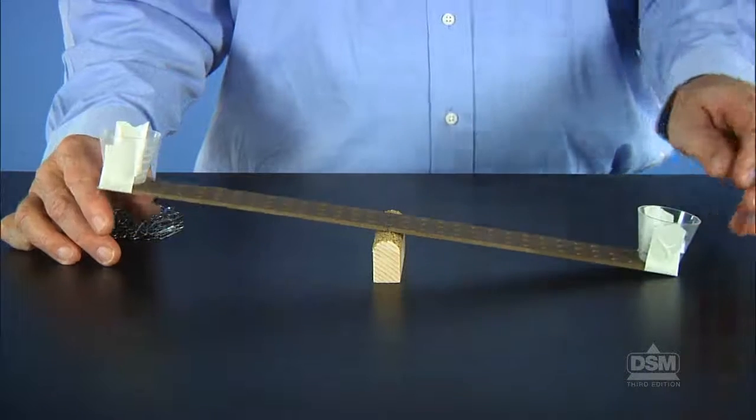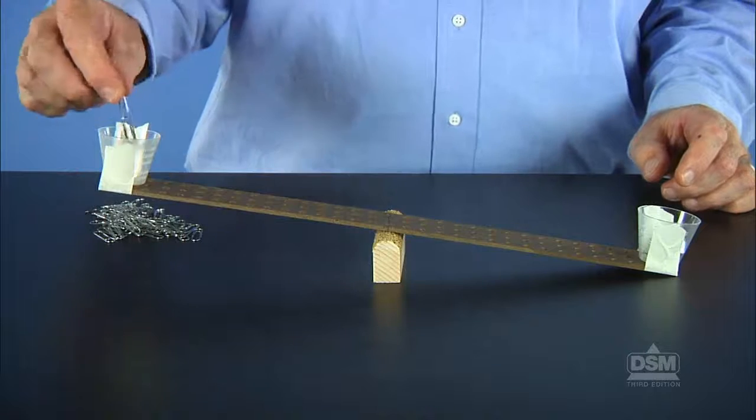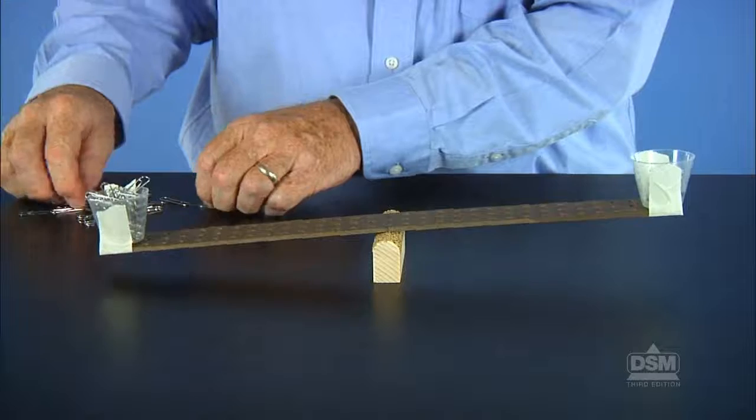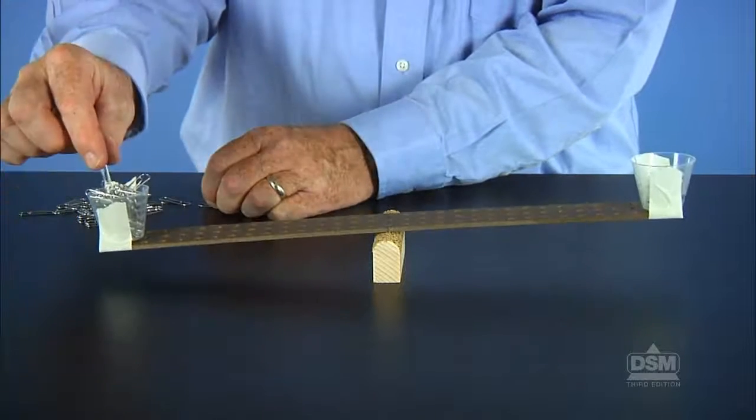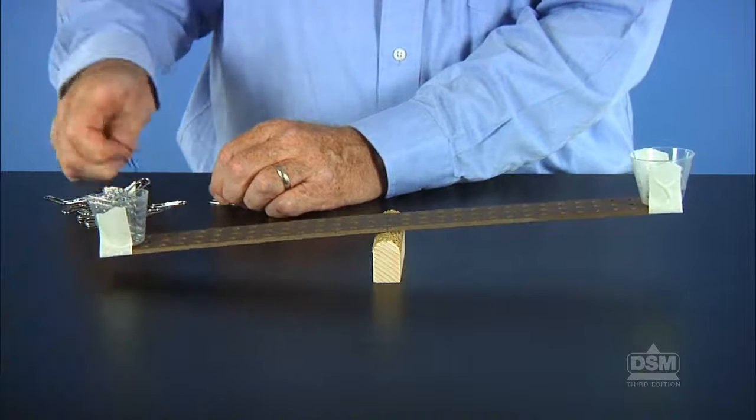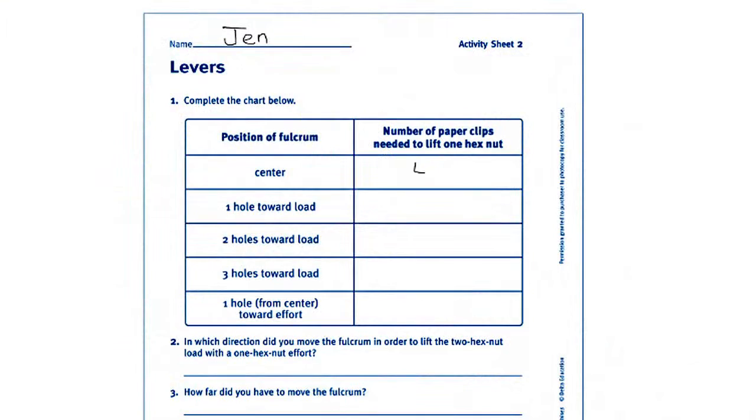Have the students place one hex nut into one of the cups. Drop paper clips into the other cup one by one and count the number of clips it takes to lift the hex nut end of the beam. Add enough paper clips to cause the effort end of the beam to touch the desktop. Instruct students to record this number in the chart on Activity Sheet 2.